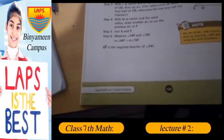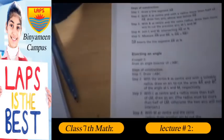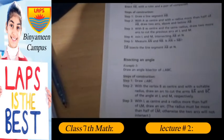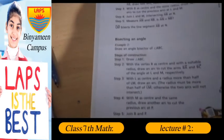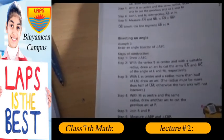Page number 160, bisecting an angle. Example number two: Draw an angle bisector of angle ABC.